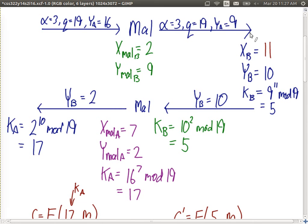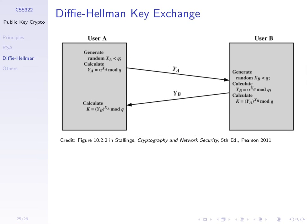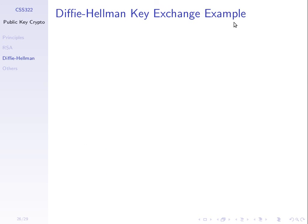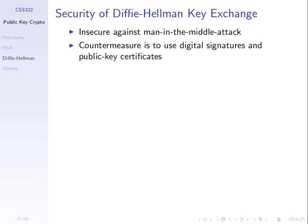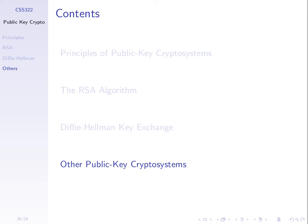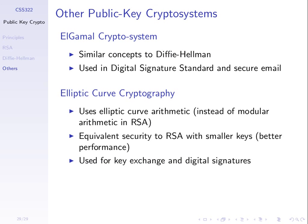Authentication is our next topic. To close on public key cryptography: the countermeasure to the man-in-the-middle attack is to use authentication, primarily in the form of digital signatures or in combination with public key certificates, which we'll introduce in upcoming topics. We've already noted there are other public key cryptosystems beyond RSA and Diffie-Hellman, and that finishes this topic.